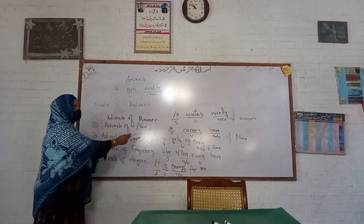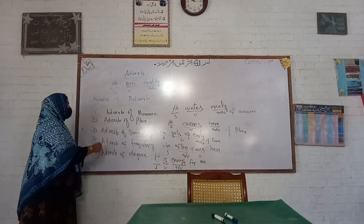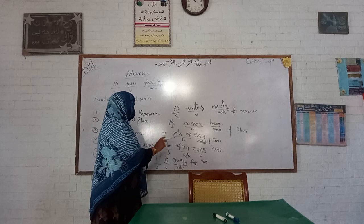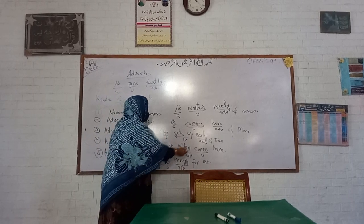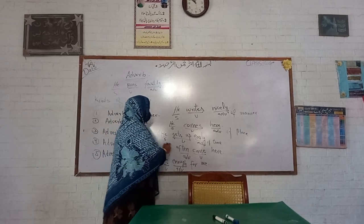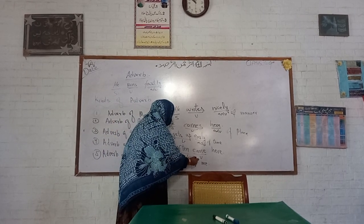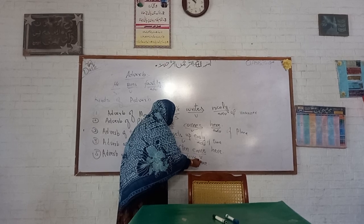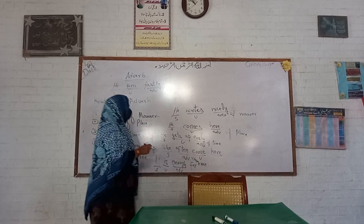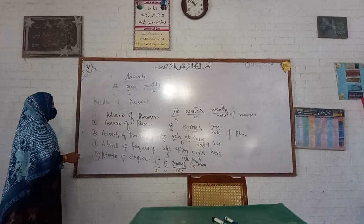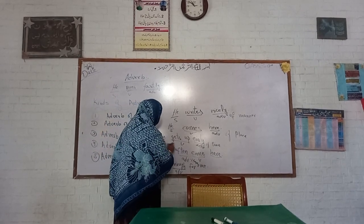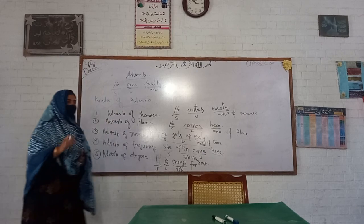Adverb of frequency shows how many times an action is performed. For example, 'She often comes here' — 'she' is the subject, 'often' is the adverb of frequency, 'comes' is the verb, and 'here' belongs to adverb of place.